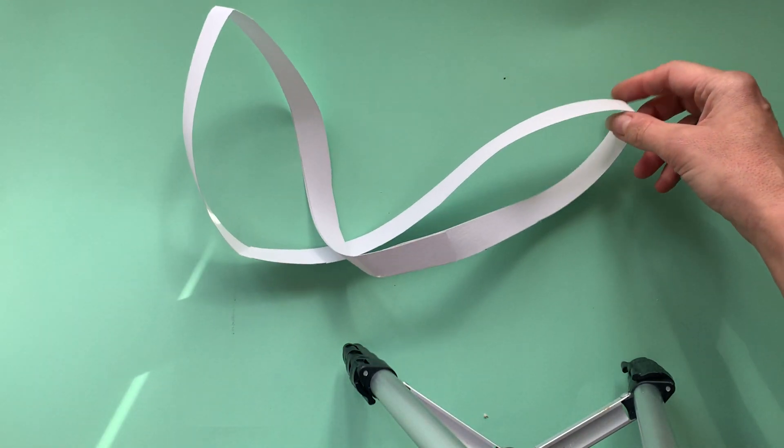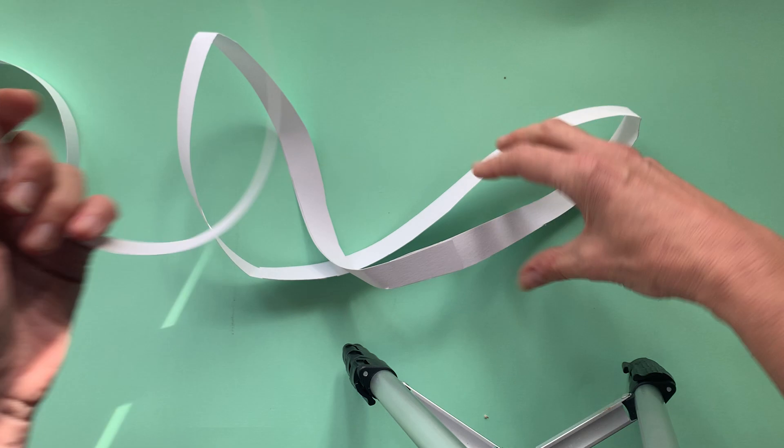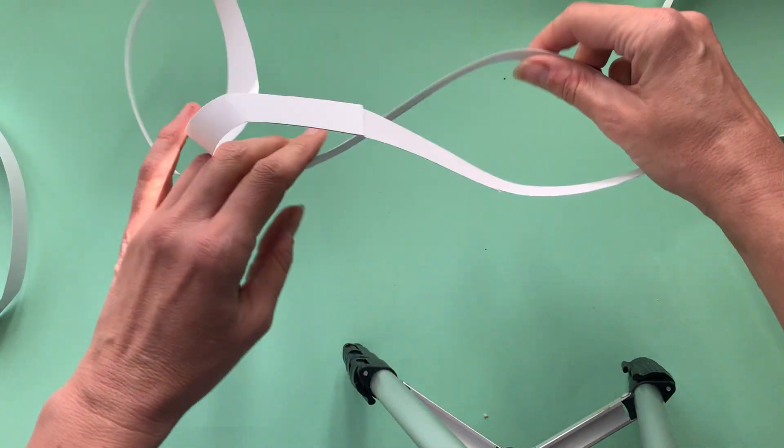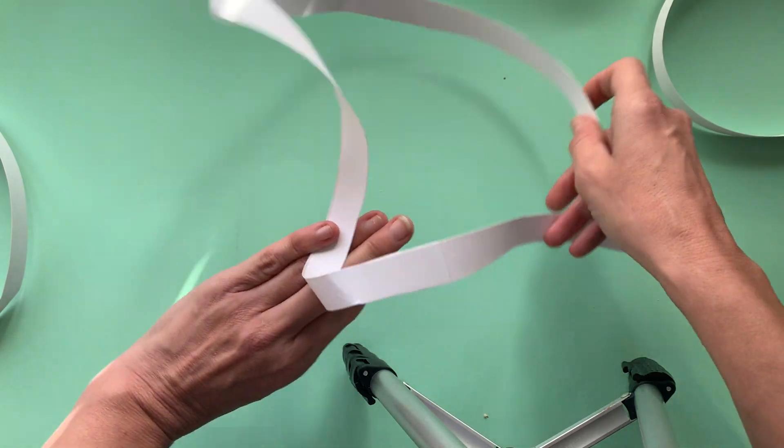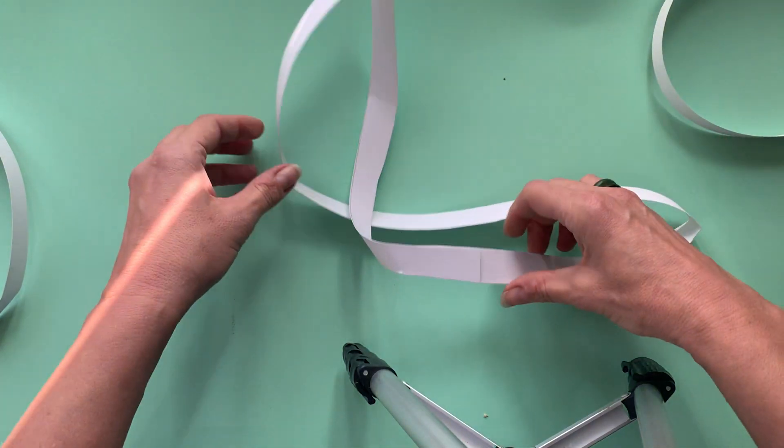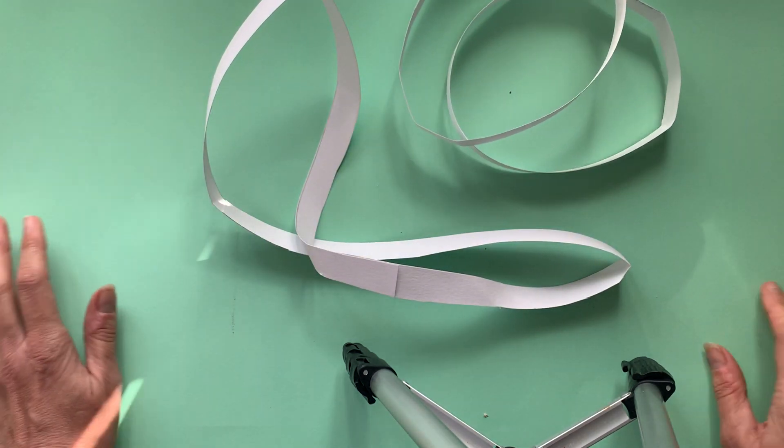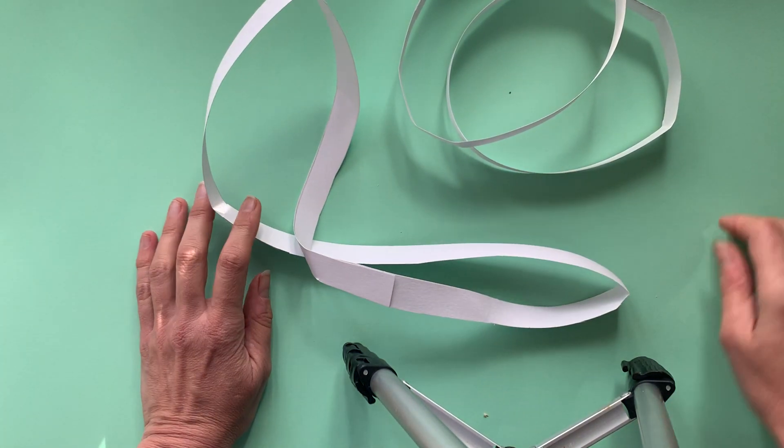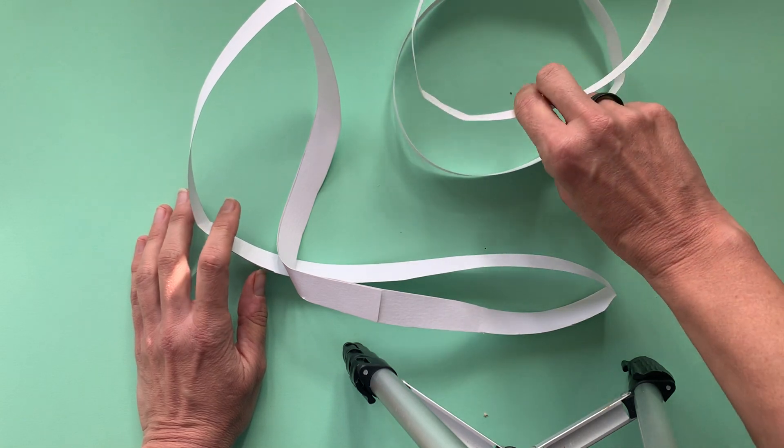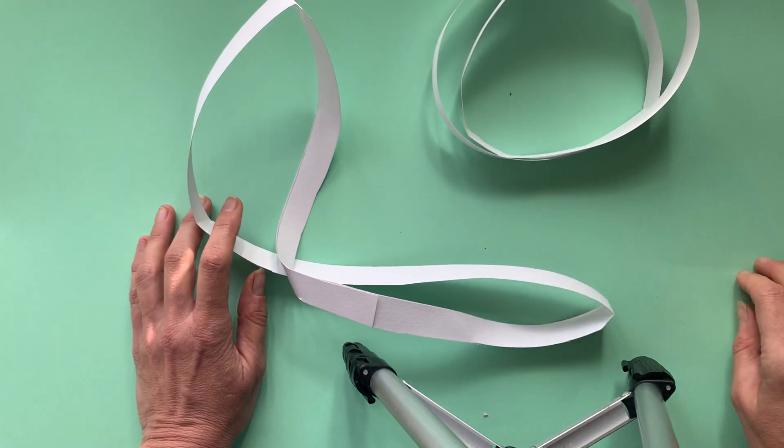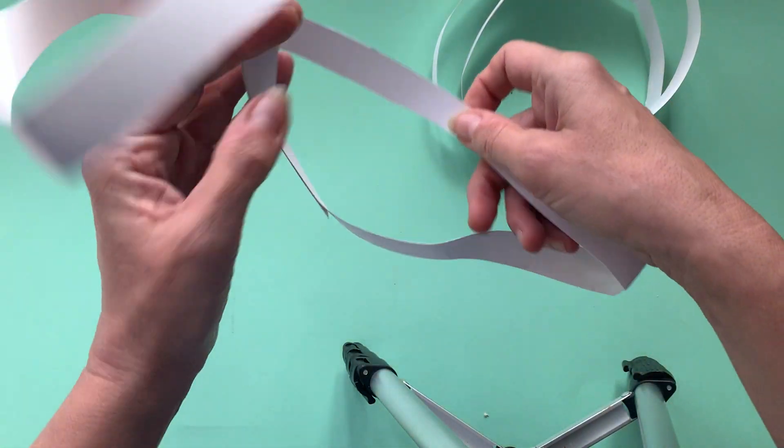Those original two strips become two separate loops, whereas this one ends up as one. It's quite a nice thing to do with kids because there's such a sense of 'but that shouldn't happen, it should become two.' You get this 'oh my god, that's amazing' moment.